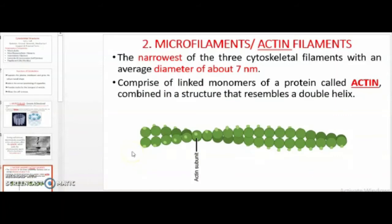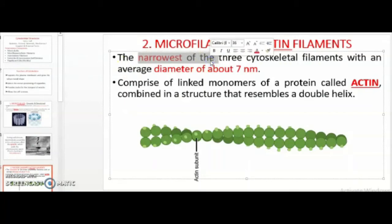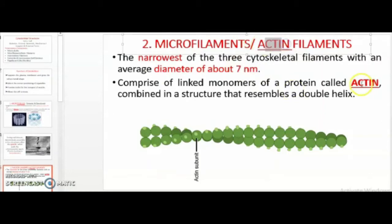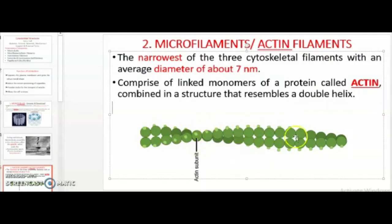The second type of cytoskeletal filaments are the microfilaments, also called the actin filaments. These are the narrowest of the three cytoskeletal filaments, with an average diameter of about 7 nanometers. They are made up of a protein called actin, and the actin monomers or subunits are arranged in the form of a helix — somewhat like DNA, though not the exact dimensions. Actin filaments appear scattered throughout the cell because they are very essentially involved in providing motion, movement, and muscular contraction.